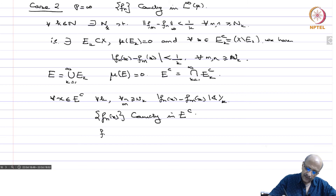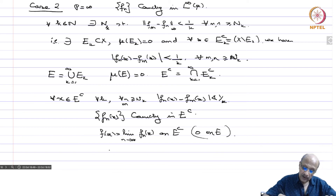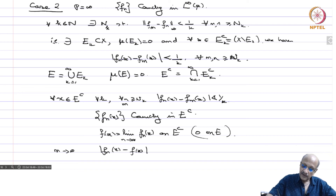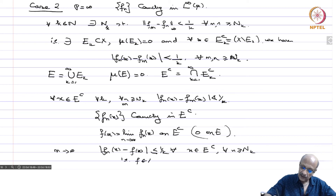Define f(x) = lim_{n→∞} f_n(x) on E^c and f(x) = 0 on E. Letting m → ∞, we get |f_n(x) - f(x)| < 1/k for all x in E^c and all n ≥ n_k. Therefore f ∈ L∞ and f_n → f in L∞.